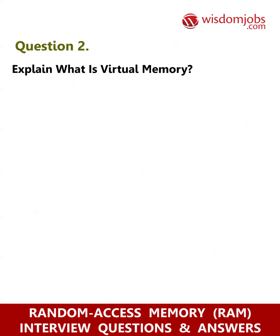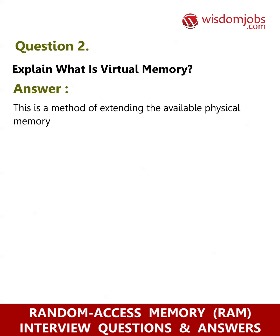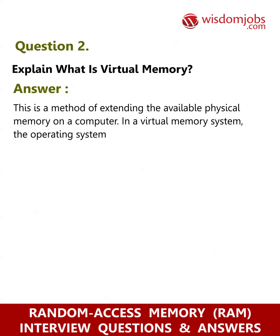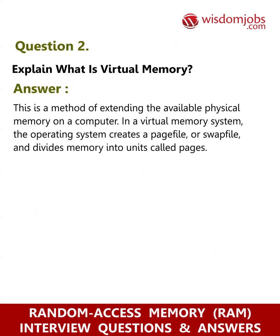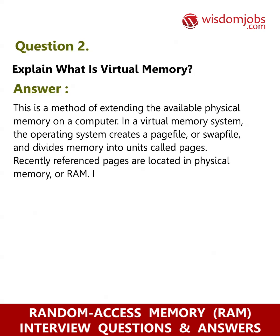Question 2: Explain what is virtual memory. Answer: This is a method of extending the available physical memory on a computer. In a virtual memory system, the operating system creates a page file or swap file and divides memory into units called pages. Recently referenced pages are located in physical memory or RAM.